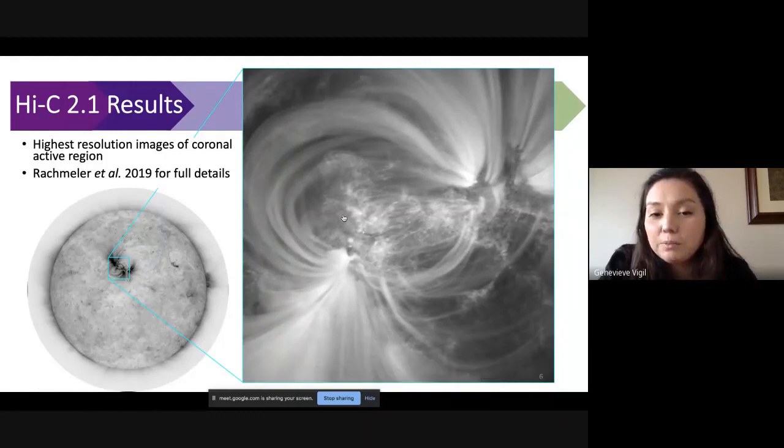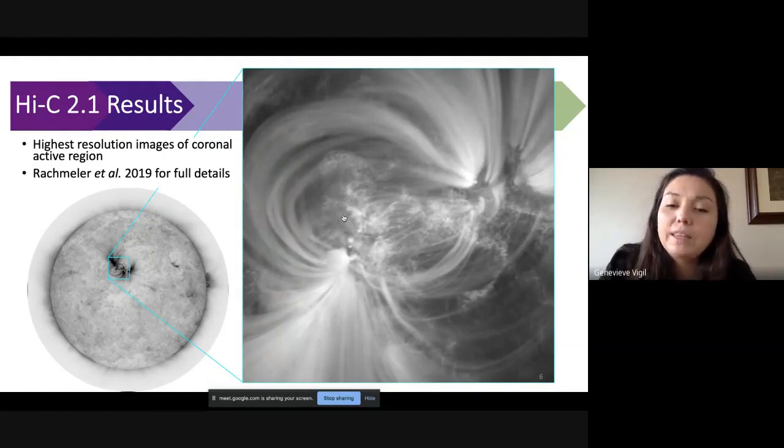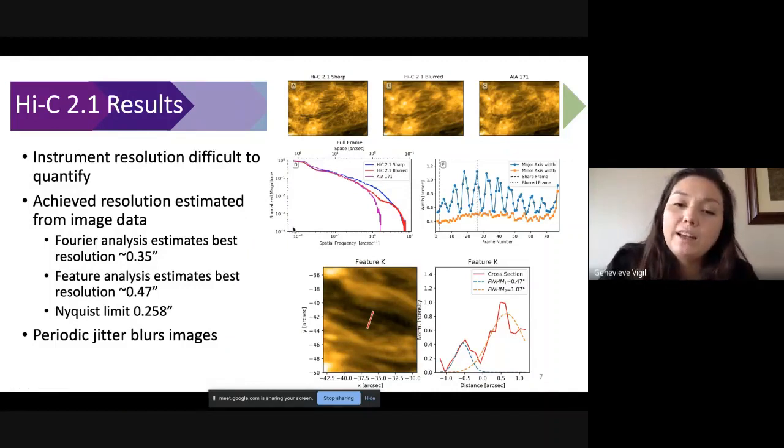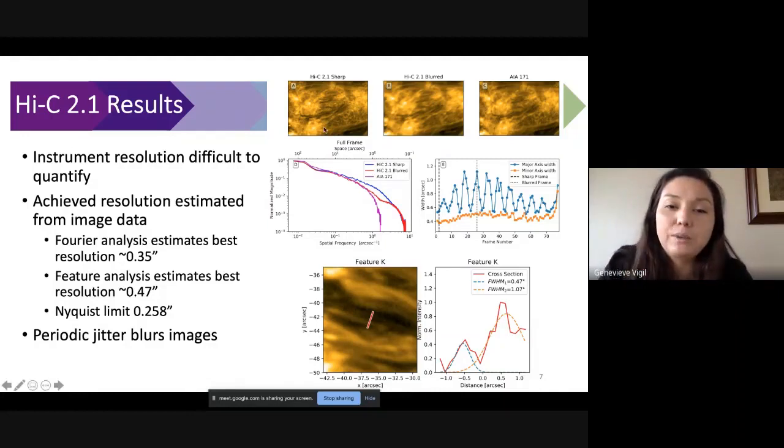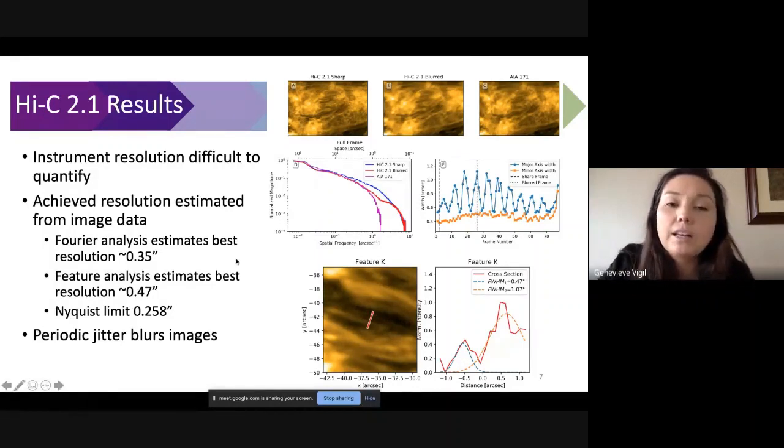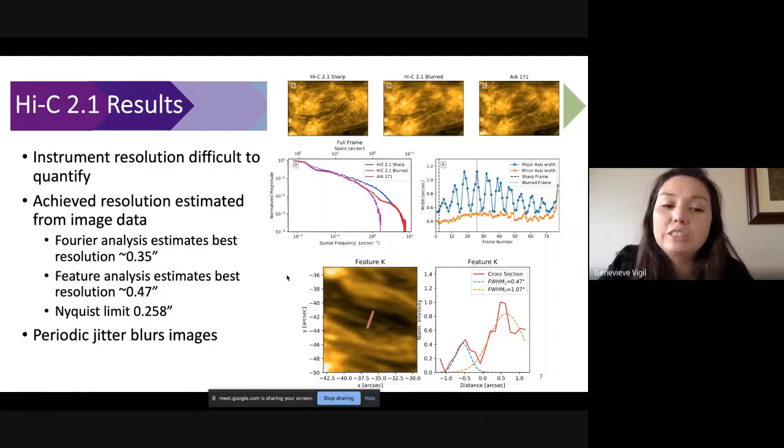But one thing that we did observe, the image is going kind of in and out of focus and that's really happening due to a malfunction of one of the gyros that's responsible for stabilizing the roll of the instrument. Every eight frames or so we got a very motion blurred image. For example, here you can see one of the very sharpest images that we achieved and right next to it we have a very blurry image of the same region. For comparison with AIA, basically our blurred images are not any better than AIA can achieve. However, we did ultimately in our sharp images achieve our goal. We got sub arc second resolution, probably about 0.3, 0.4 arc seconds is our achieved resolution.